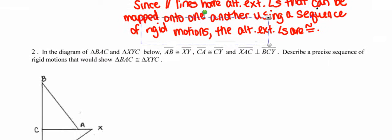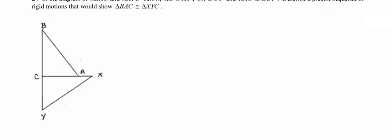Okay, let's go ahead and take a look at number two down at the bottom. It says in this diagram we're given these triangles with these congruent sides. I'm going to go ahead and label all the given information. So side AB congruent to side XY, side CA is congruent to side CY, and lastly, segment XAC is perpendicular to segment BCY. So I'm going to label my figures. And they're asking us to describe a precise sequence of rigid motions that will show that the two triangles are congruent to one another.